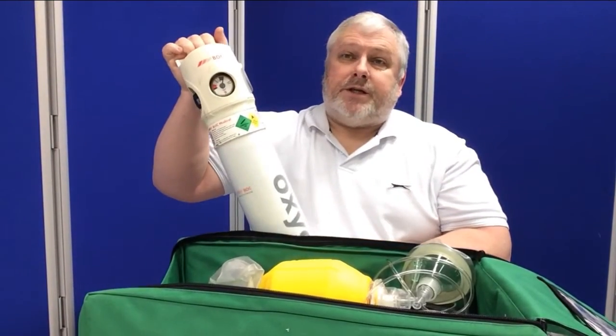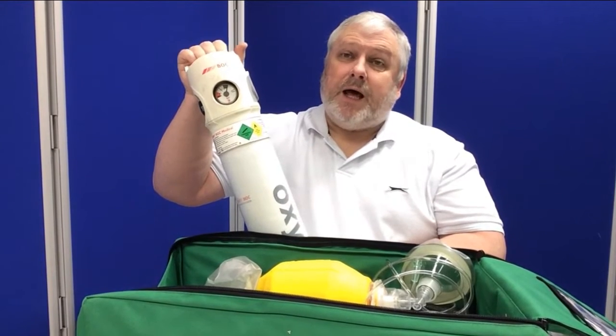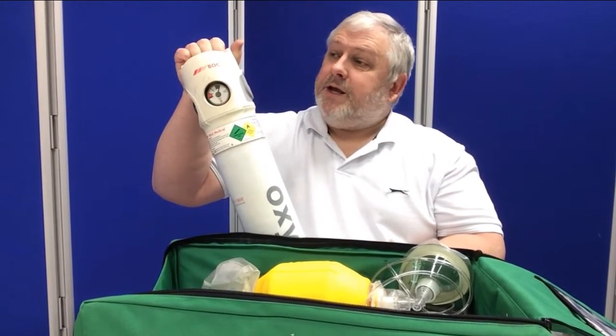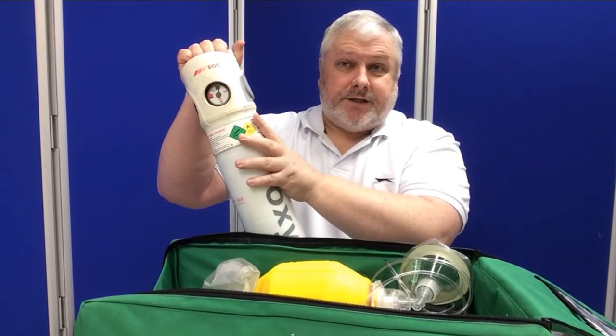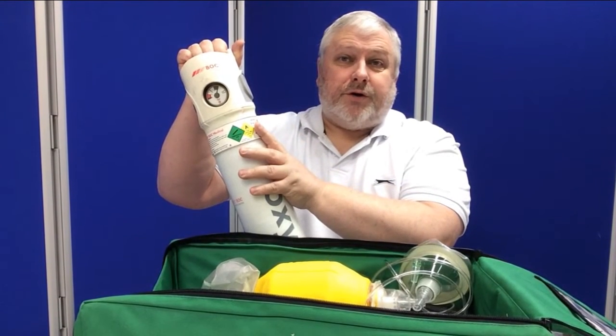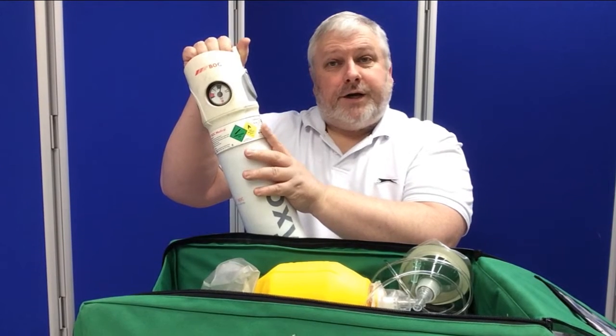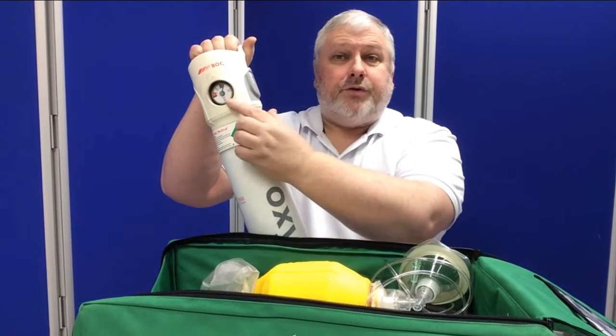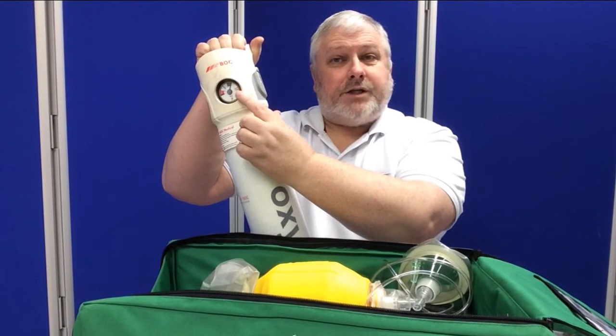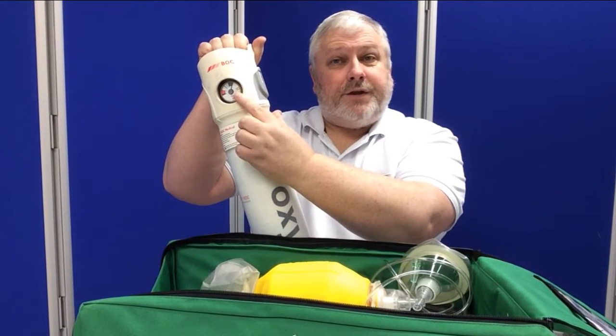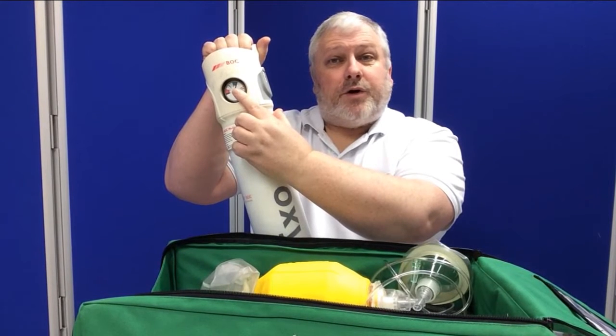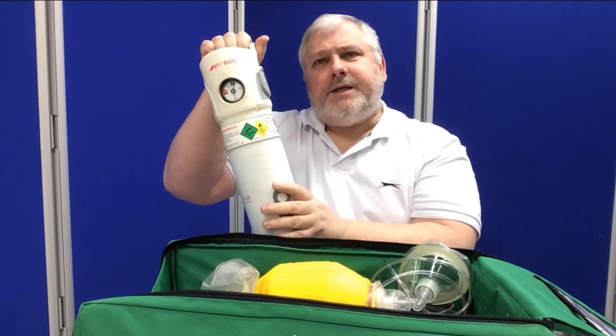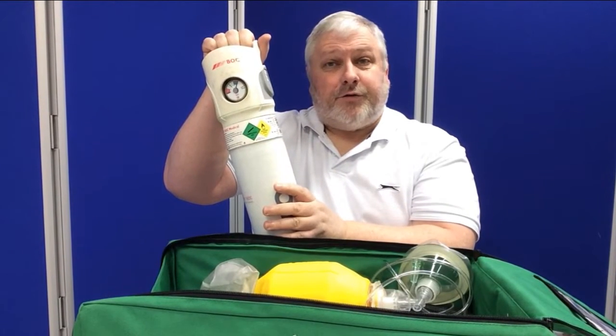This particular cylinder has what is known as a live gauge. That means it will always show how much oxygen is in the cylinder, whether switched on or not. Therefore, in order to check this type, all you need to do is look at the gauge. As long as it's in the green, everything is fine. Once it hits the white, that's three quarters full and downwards, it's time to start thinking about getting it replaced.